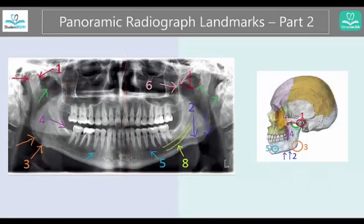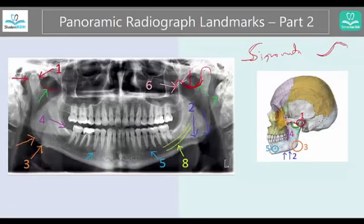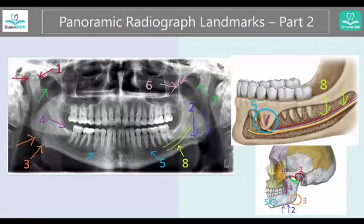Number seven is called the sigmoid notch. This is just between the condyle and the coronoid process — this dipping part. Take the 'S' and think about the curve, like you would have between the condyle and coronoid process. So you can remember this is called the sigmoid notch.